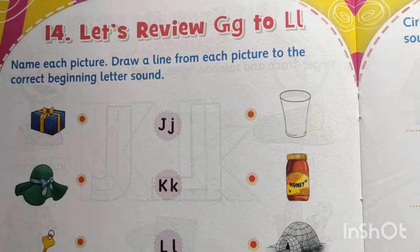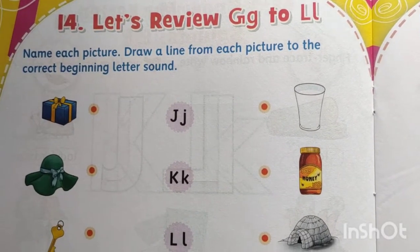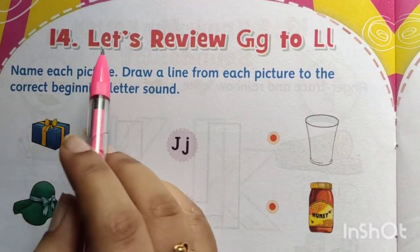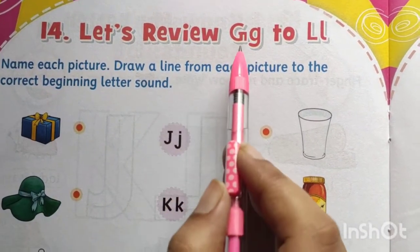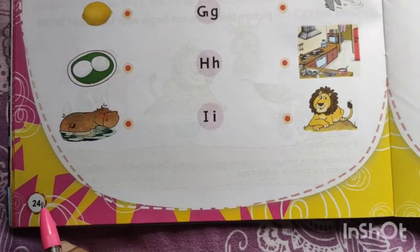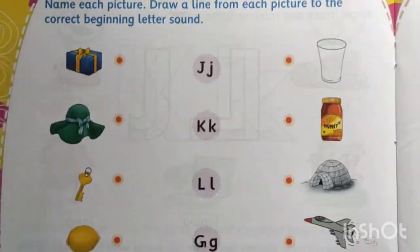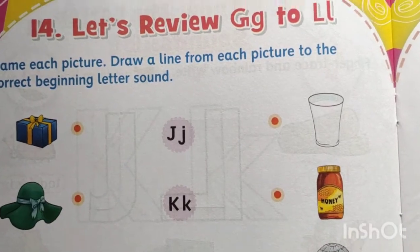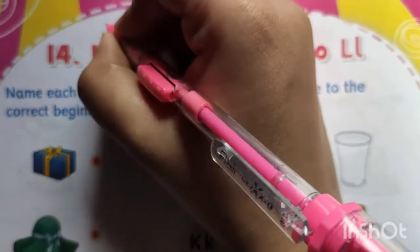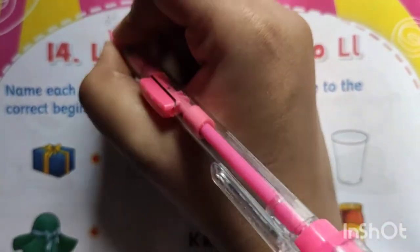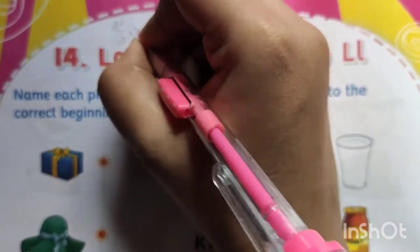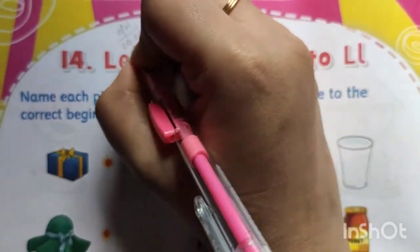Hey children, today's class work is about chapter number 14 from your English course book. Write here CW and today's date: 20-07-2021.